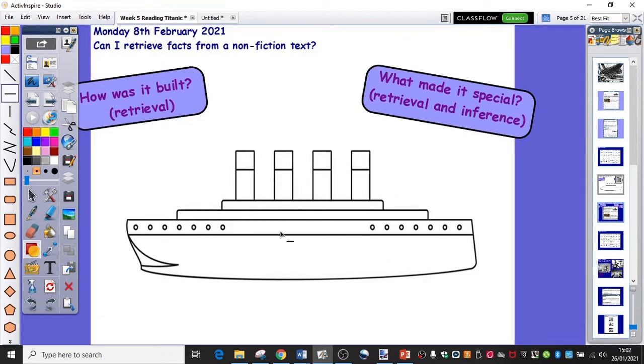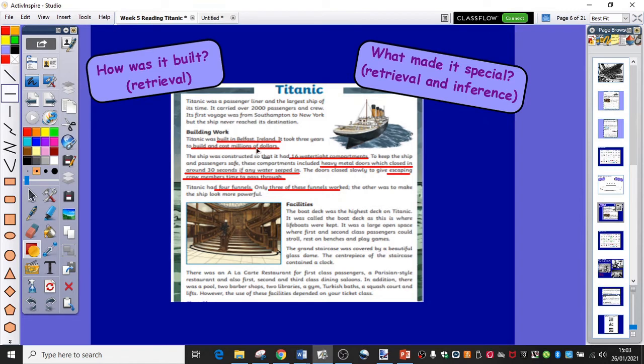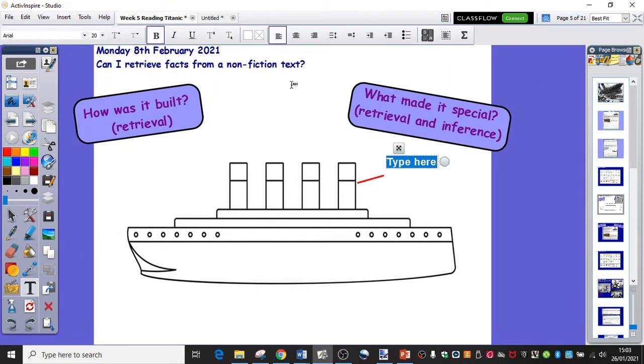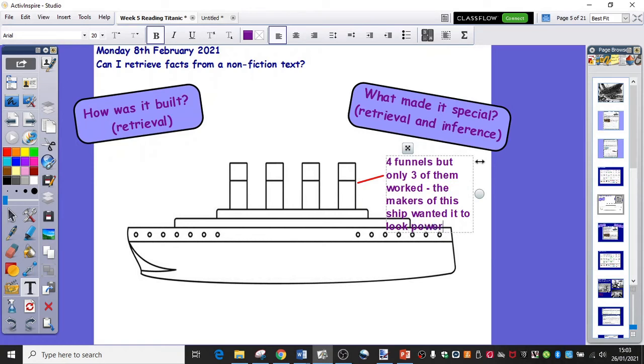And then all you need to do is go to your diagram and start to label it. So I might take that funnel fact. I mean, obviously, you will put all of this on. I'm just going to do one today and I'm going to go with the funnels because I really like that fact. So I'm just going to draw a label to the funnels. I'm just stating the obvious. Here we go. We have four funnels. If we could see the text, that would be nice. Here we go. So four funnels. But only three of them worked. And here's a slight inference, I suppose. The makers of this ship wanted it to look powerful.